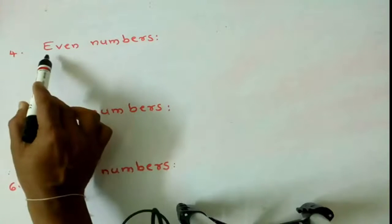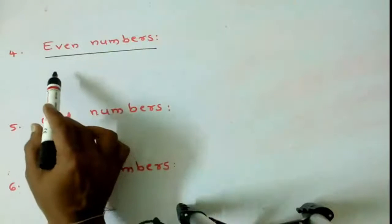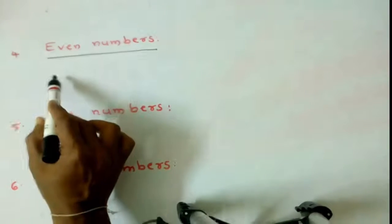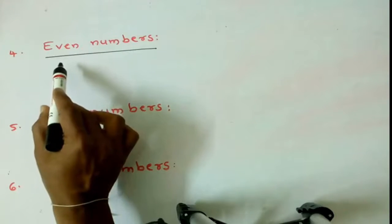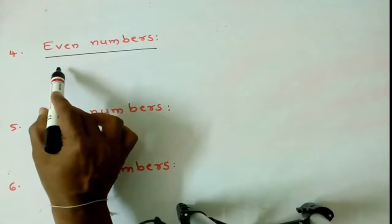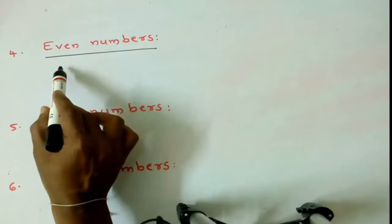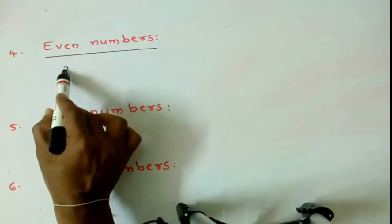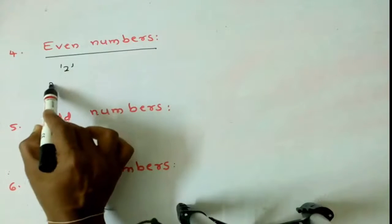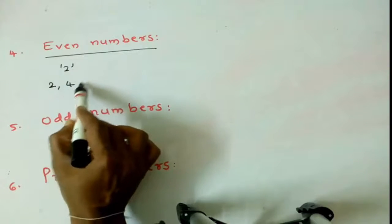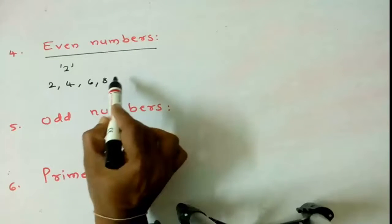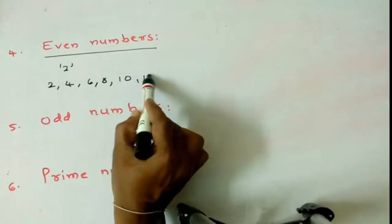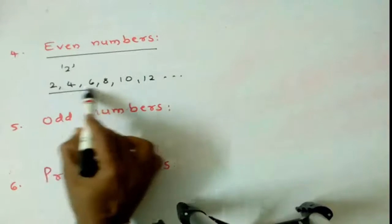Now we are moving to even numbers. This is the fourth type of numbers. Even numbers means the number should be divided by 2, means 2 multiples. 2, 4, 6, 8, 10, 12, like that. These are all even numbers.